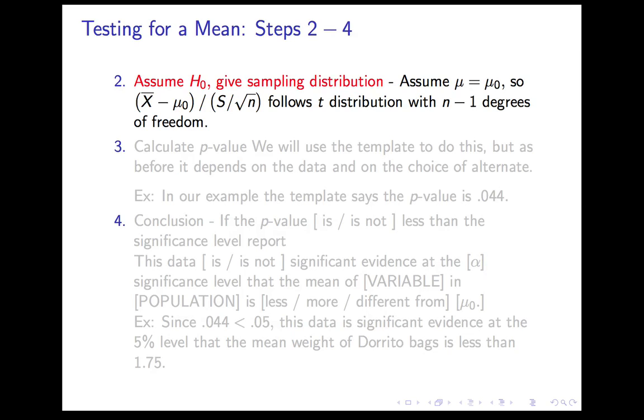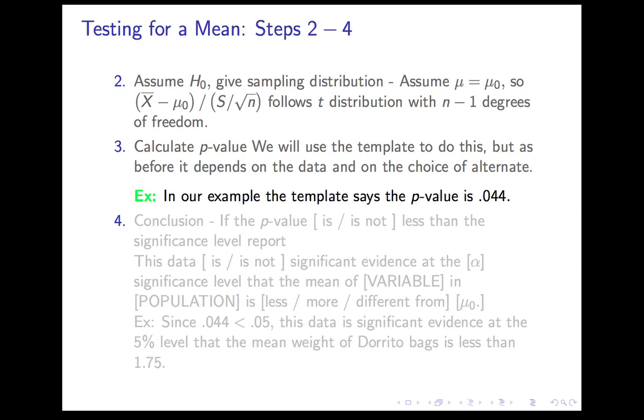Step 2: assuming the null hypothesis, give the sampling distribution. In this case, we're assuming μ is equal to 1.75, or whatever that is, and this quantity (x̄ - μ₀)/(s/√n) follows a t-distribution with n minus 1 degrees of freedom, which allows us to calculate the p-value, which is the probability. We'll use the template to do this. And in this case, the p-value is 0.044, so I'm going to walk you through that this time, and then we'll do it more carefully the next time.